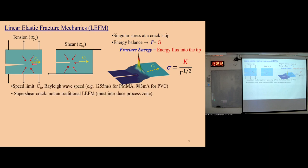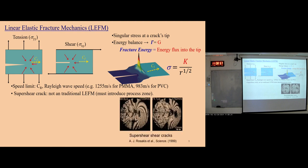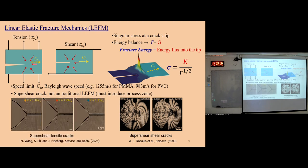During propagation, the crack usually has a speed limitation, which is the Rayleigh wave speed — slightly smaller than the shear wave speed. But in some special situations, super-shear cracks can exist. In LEFM, a finite-size process zone is introduced to generalize this solution. Super-shear in shear cracks was predicted about 20 years ago. Recently, Jay's group found that tensile cracks can also surpass to super-shear — which is pretty surprising.